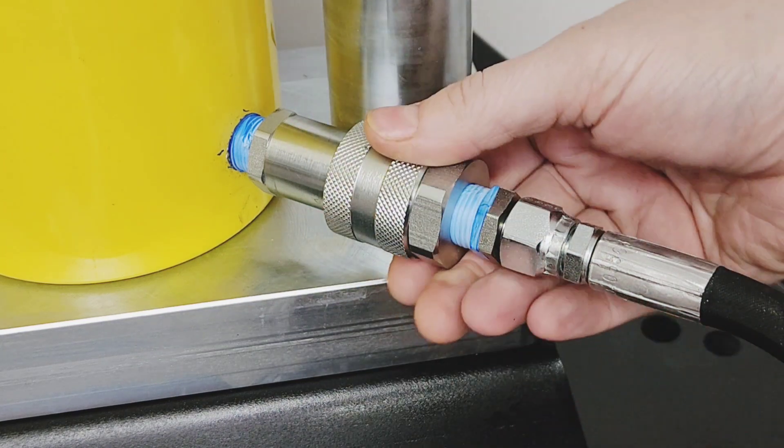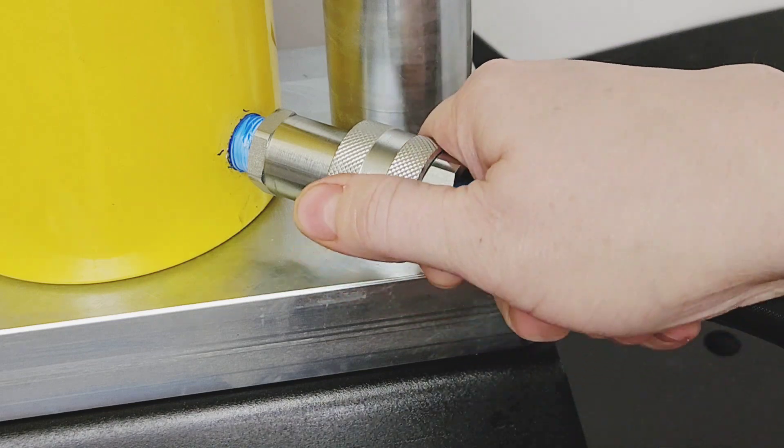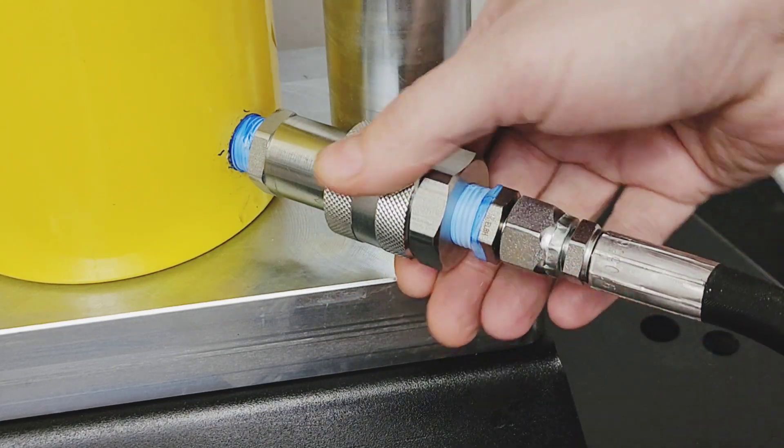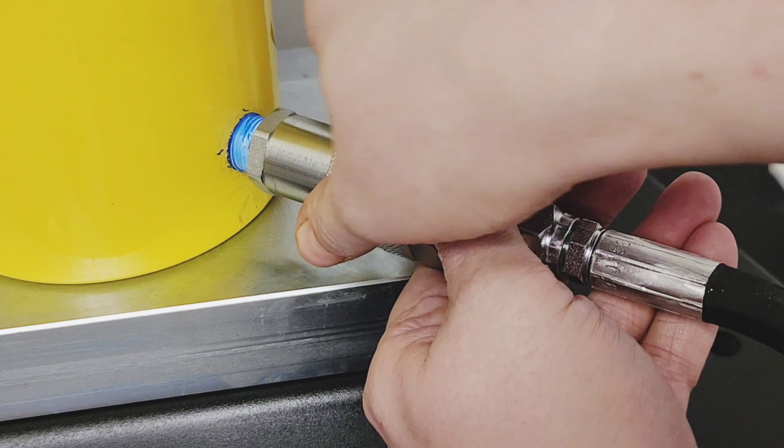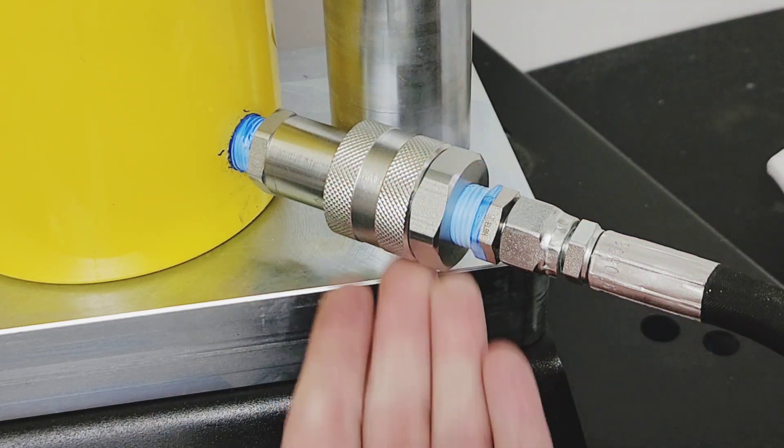Tighten as much by hand, and there's no need to use a wrench for this. I like to give it just a secondary tighten by hand just to make sure everything's set.